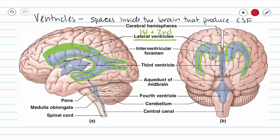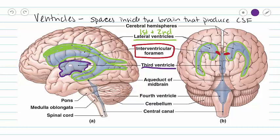These lateral ventricles are connected to the third ventricle via the intraventricular foramen — those are little ducts right here that connect our lateral ventricle up to our third ventricle. Our third ventricle is going to be housed inside of our diencephalon. There is an indentation and a space there, and that space is our third ventricle, taking up space in the middle of our diencephalon.